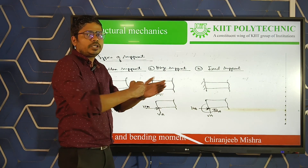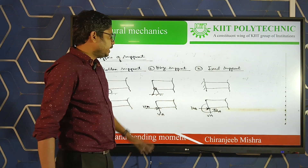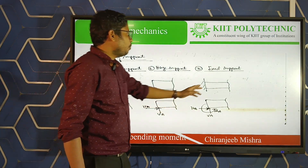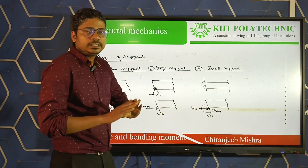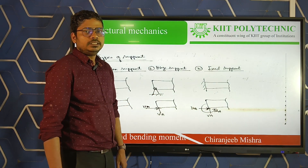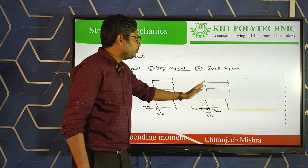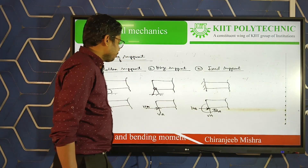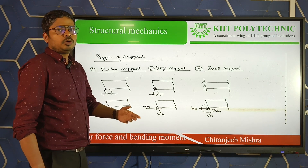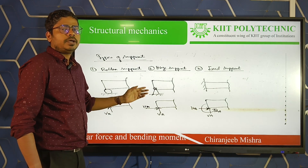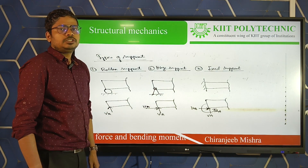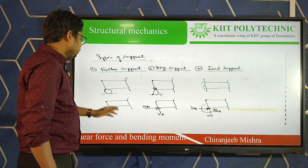Hinge support is very common — you see it in doors, where hinges allow easy rotation. That is the hinge support. Last one is the fixed support, where there is no movement at all — it is completely fixed at one side.